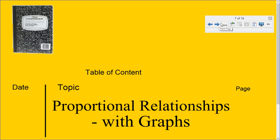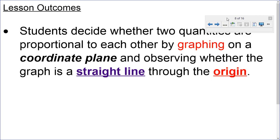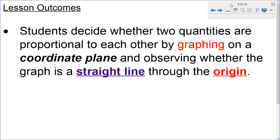The learning outcome we hope to achieve is students to decide whether two quantities are proportional to each other by graphing on a coordinate plane and observing whether the graph is a straight line through the origin. Some very important words on the line.